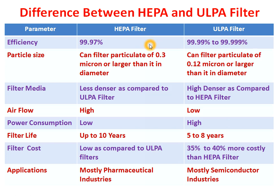Now we will see particle size. The HEPA filter can filter particulates of 0.3 micron or larger in diameter, whereas the ULPA filter can filter particulates of 0.2 micron or larger. That means the ULPA filter can filter smaller particles than the HEPA filter.